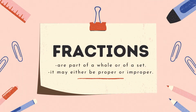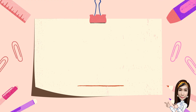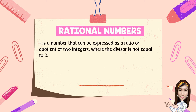Fractions are part of a whole or of a set. They may be either proper or improper. Fractions fall under a set of numbers called rational numbers. A rational number is a number that can be expressed as a ratio or quotient of two integers, where the divisor is not equal to zero. So it can be written in the form A over B, where B is not equal to zero.